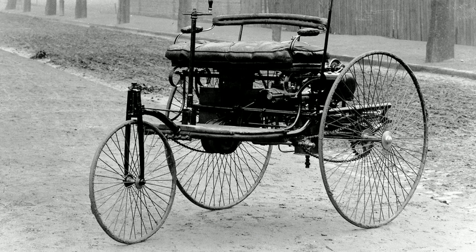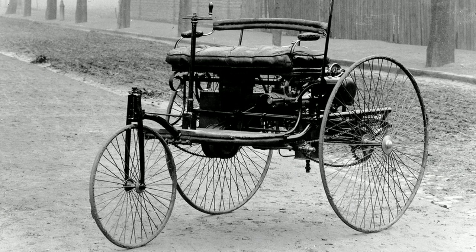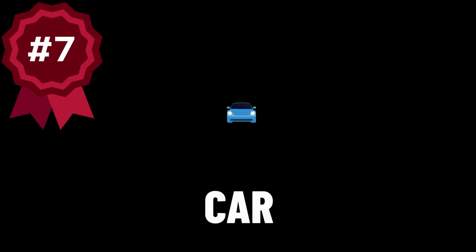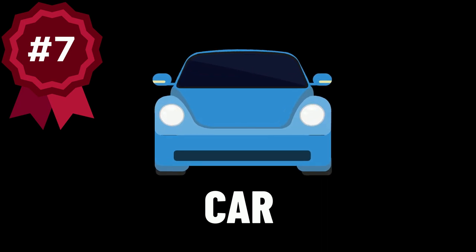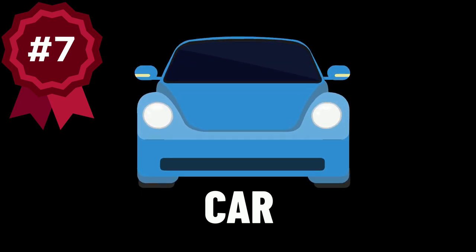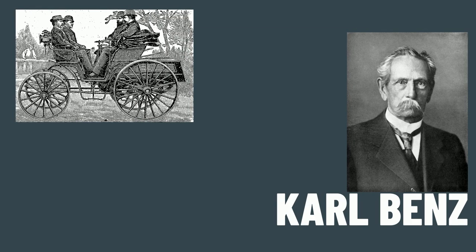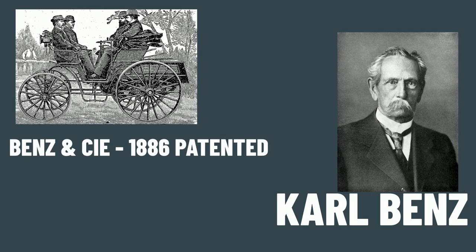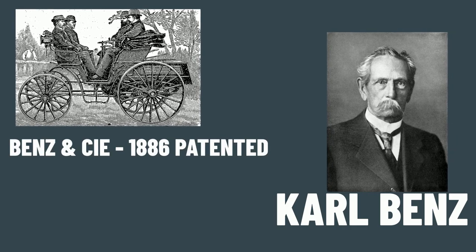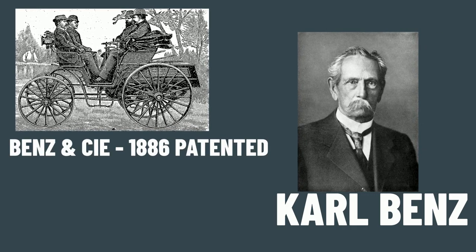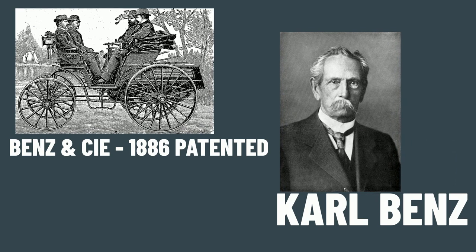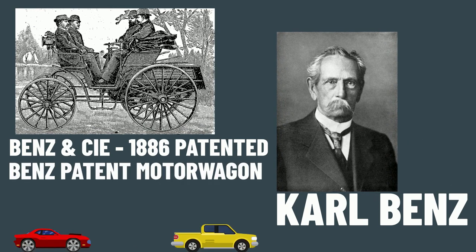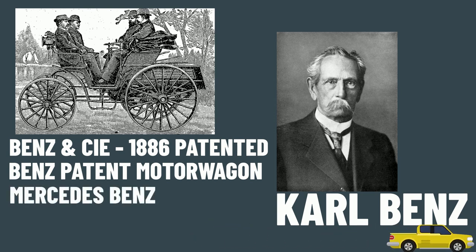Getting back to our lesson — Victorian invention number seven: the car. The very first true motor car was brought about by a man called Carl Benz, who owned a company called Benz and Co. In 1886 they received the patent for their Benz Patent Motor Wagon. The Benz company went on to become part of Mercedes-Benz, of course.